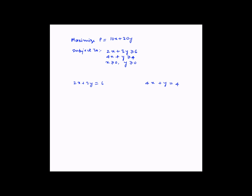For the first equation, let us put x equal to 0. The equation becomes 0 plus 3y is equal to 6, or y is equal to 6 divided by 3, which is equal to 2. Now if we put y as 0, we get 2x is equal to 6, or x is equal to 6 divided by 2, which is equal to 3. So the x intercept is 3 and the y intercept is 2.